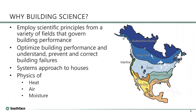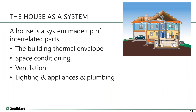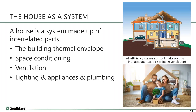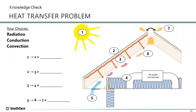Having gotten through the fundamentals, we're now able to apply them to specific situations — in this case, high-performance insulated roof lines. We're always trying to push the systems approach to a house: the components that make up the envelope, how they interact, and the people aspect of all this. Our learning objectives will focus on ways to do insulated roof lines, with spray foam being one option among several.